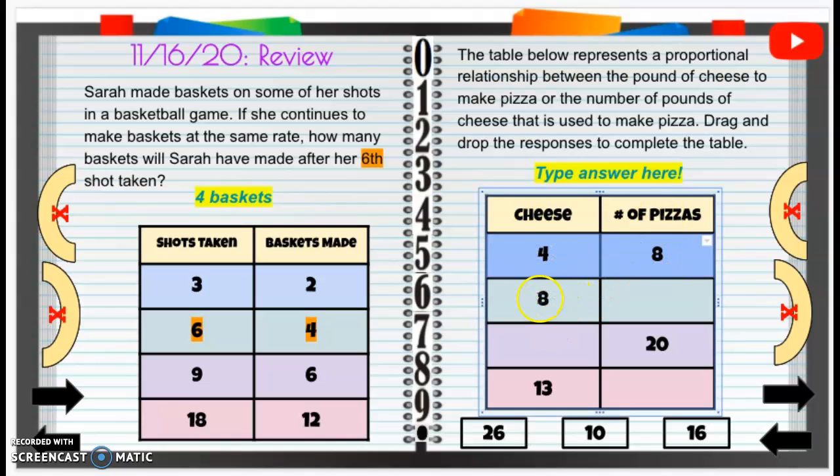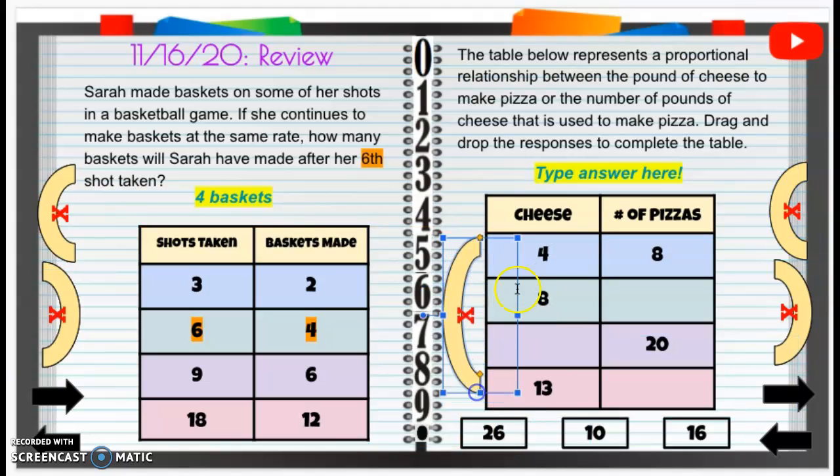We need to figure out how many pounds, eight pounds of cheese makes how many pizzas. So we can either look across or we can look up and down. But here's the issue. If we do look up and down here, if we say, okay, four to get to 13, you can't get to 13 from four that easily. So we might not want to use that at first.